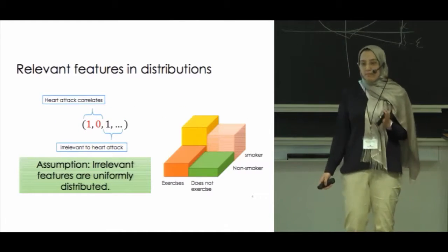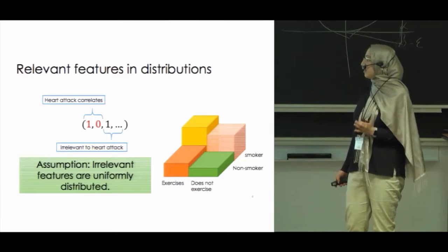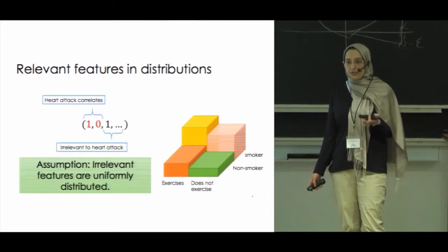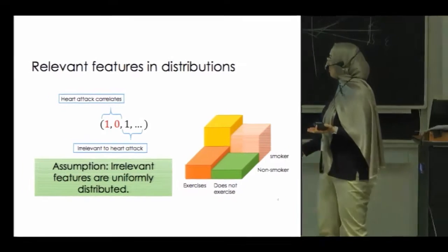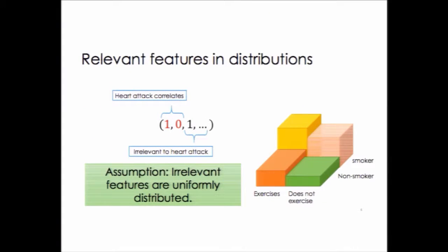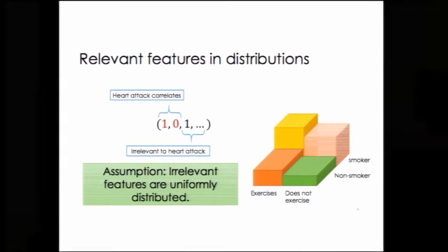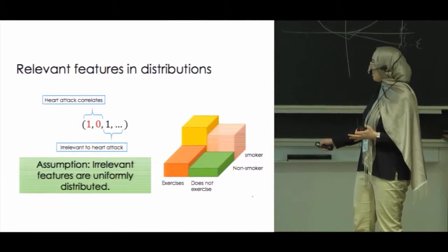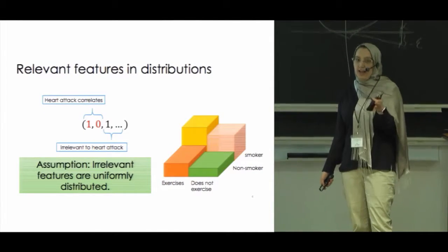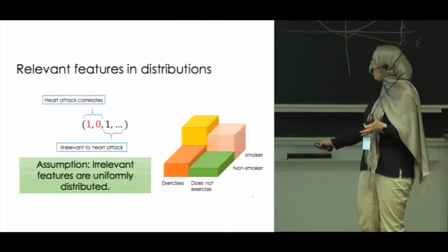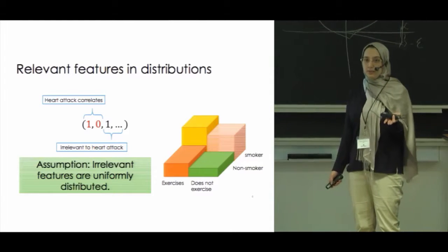To solve this problem, we make the assumption that the irrelevant features are those that are distributed uniformly. For example, back to our example: if I partition the domain elements based on the relevant features — for example, exercising and smoking — then within each chunk the probability of getting a male or female is one half. So within each chunk it is uniformly distributed.